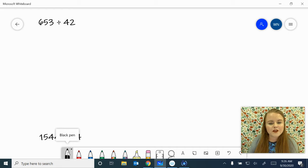Our first problem is going to be 653 divided by 42. Before I get started, I'm going to think about my friendly numbers, thinking 1, 2, 5, 10, 20, and 50.